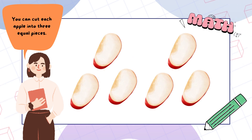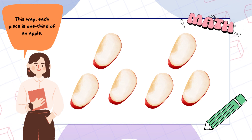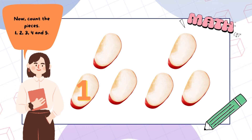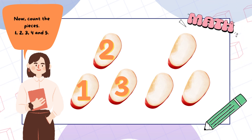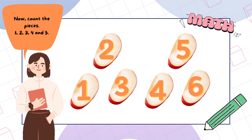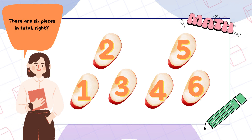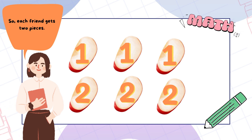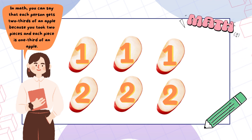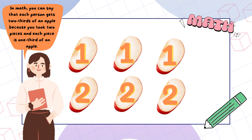You can cut each apple into three equal pieces. Each piece is one third of an apple. Now count the pieces: one, two, three, four, five, and six. There are six pieces in total, right? So each friend gets two pieces. In math, you can say that each person gets two thirds of an apple, because you took two pieces and each piece is one third of an apple.